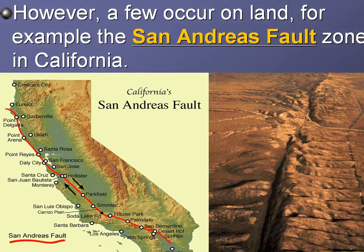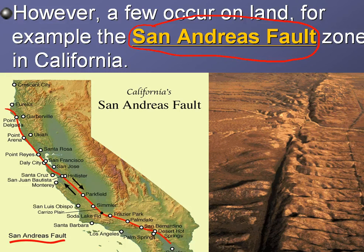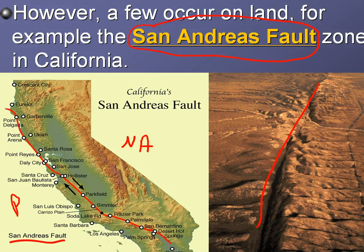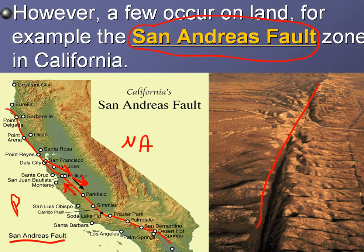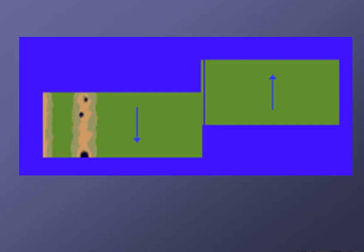Does it always happen on the ocean floor? No — there are good examples on land, and one of them is right here in the United States: the San Andreas Fault. If you've ever been to LA or San Francisco, you actually drove over the San Andreas Fault. This part of California is on the Pacific Plate, and this part is on the North American Plate, and these plates are actually sliding past each other — a transform fault boundary. Interestingly, San Francisco is moving one way and LA is moving the other, so eventually the cities will be side by side.